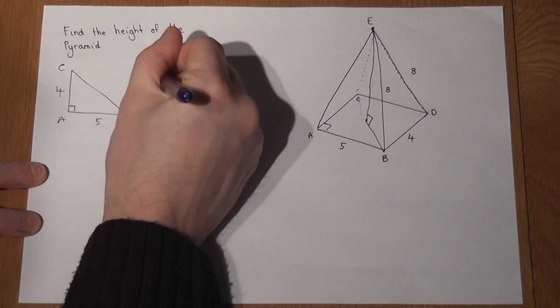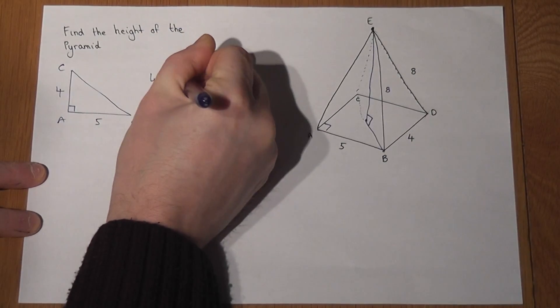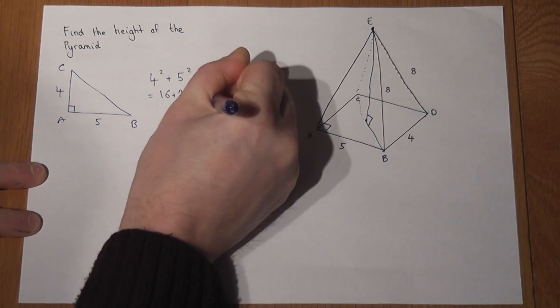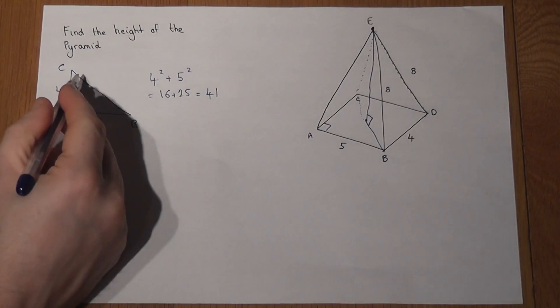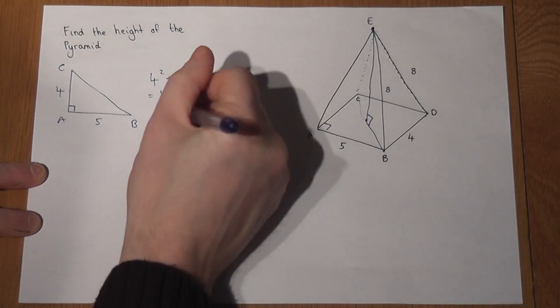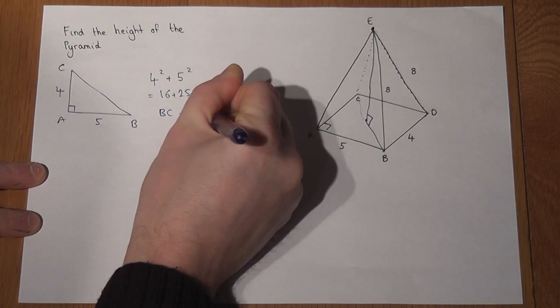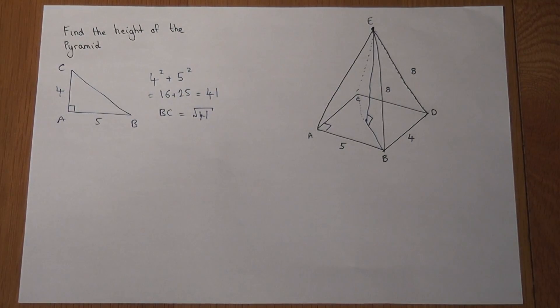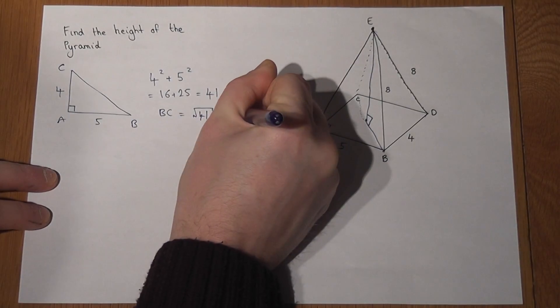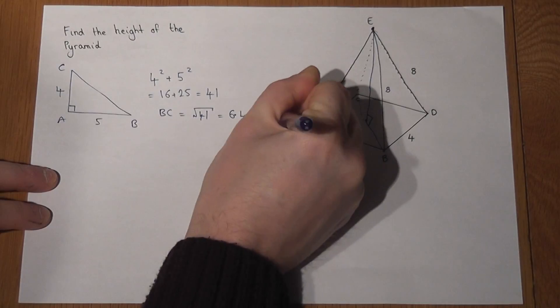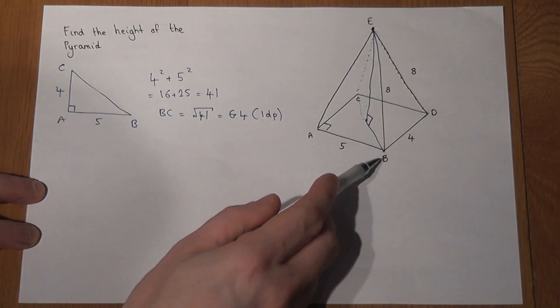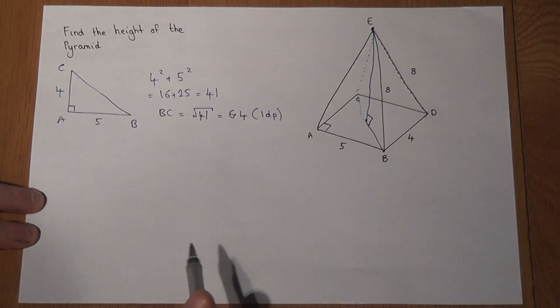4 squared plus 5 squared, which is 16 plus 25, equals 41. So this length here, B to C, must be the square root of 41, which if we work out as a decimal is 6.4 to one decimal place. That's just been rounded. So I found the entire length from C to B across this base.